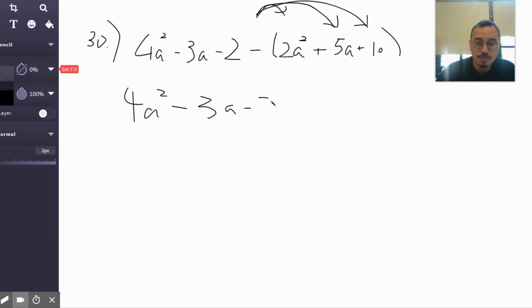Now minus 2a squared - so this is the distribute portion. Negative times 5a is negative 5a, likewise for the last term minus 10. So distribute, combine, solve. Now here we only have to distribute and combine, there's nothing to solve. So who's in the same family?